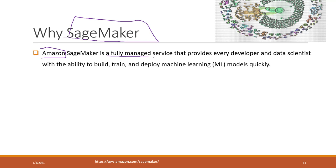SageMaker is designed to build, train, and also deploy machine learning models. That is the purpose of AWS SageMaker.